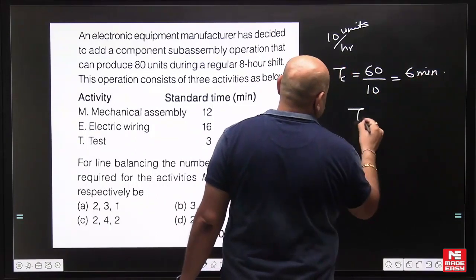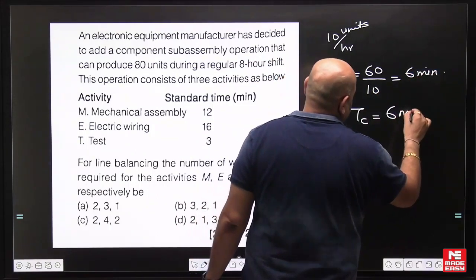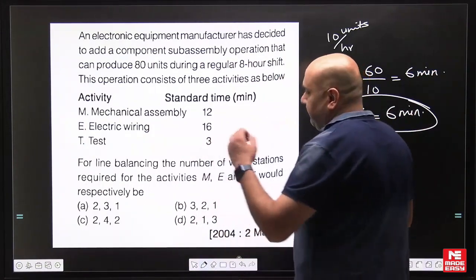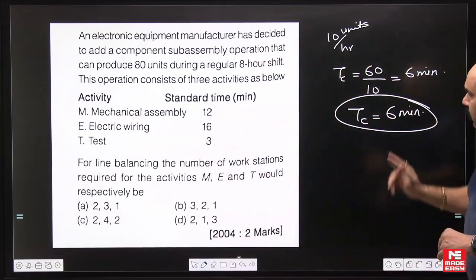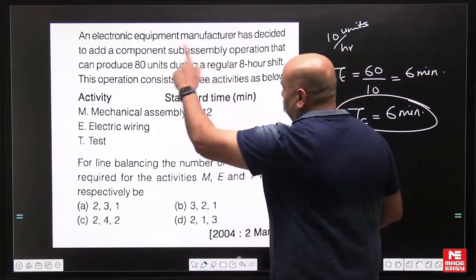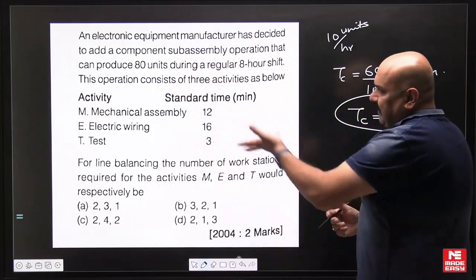Your cycle time should not exceed 6 minutes. That should be our cycle time maximum - 6 minutes - in order to meet this production target.